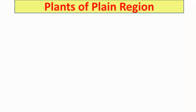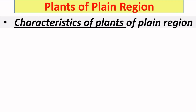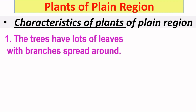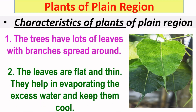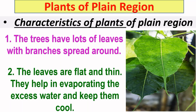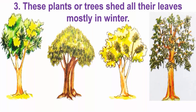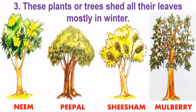Next are plants in plain region. The trees have lots of leaves with branches spread around. The leaves are flat and thin, which helps in evaporating excess water and keeps the plant cool. Water evaporates from the surface of leaves, and if the leaf surface is flat, more water will evaporate. These plants shed all their leaves mostly in winter. Examples of plants found in plain areas are neem, peepal, sesham, and mulberry tree.